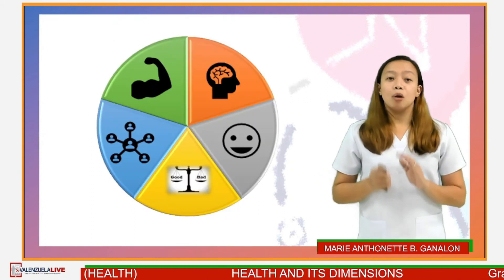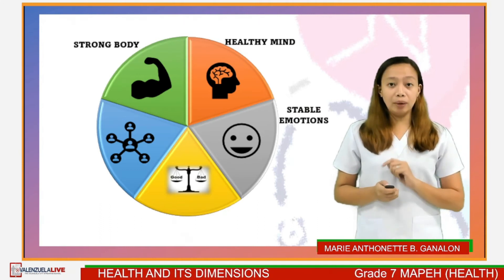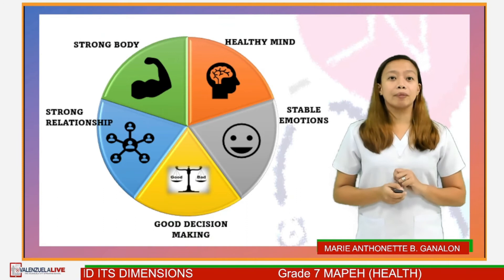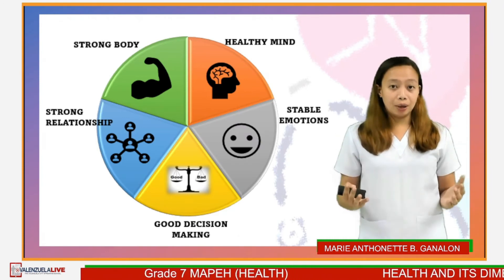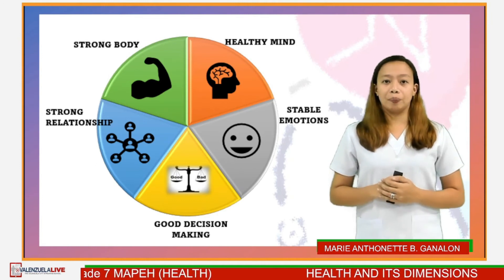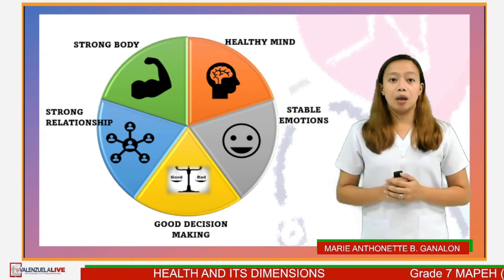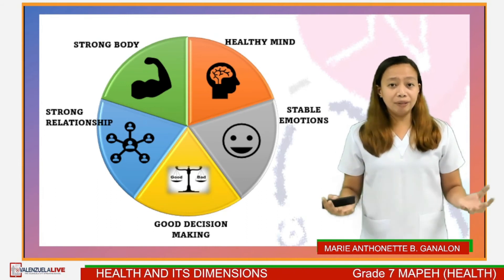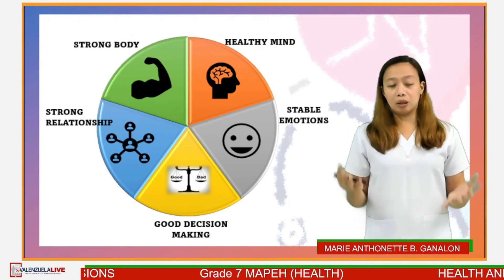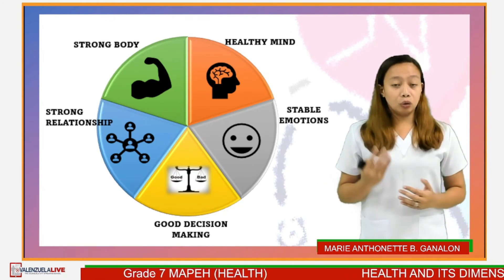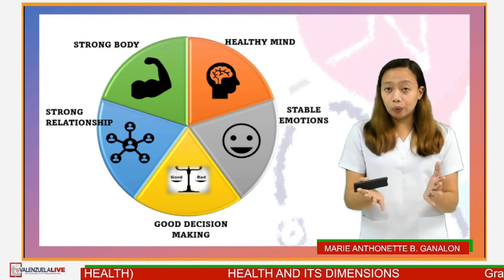For us to attain holistic health, we must have a strong body, healthy mind, stable emotion, strong relationships, and good decision-making. Remember, to achieve well-being and good health, the dimensions are equally crucial. These are like puzzle pieces that must be put together for meaningful interrelationships between health variables. To live a happy and fulfilled life, we all seek a healthy balance of all health parameters. Cultivating each dimension now will benefit you for the rest of your life.